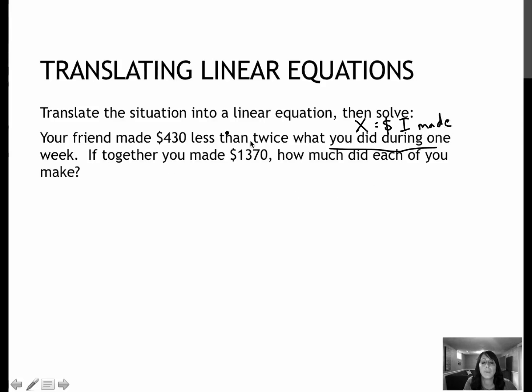Now, our friend made more than us, but they tell us what our friend made in relationship to us. So I'm going to assign another variable, but really I'm going to use x. We're going to say our friend made $430 less than, remember less than is that one in the wrong order, twice what we made. So if we made x, twice what we made would be 2x, and $430 less than that would be subtracting 430. So friend made 2x minus 430.